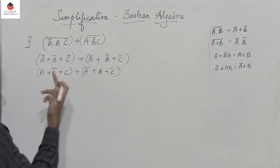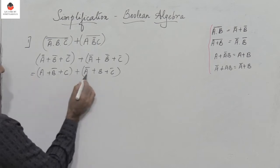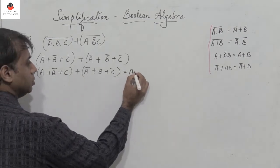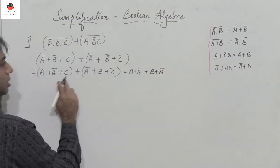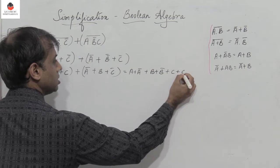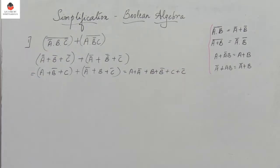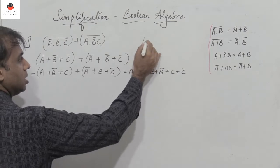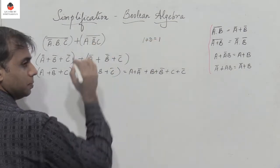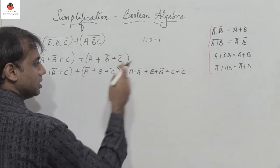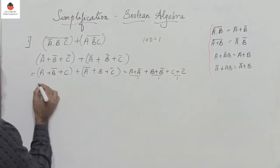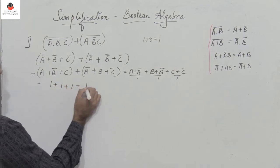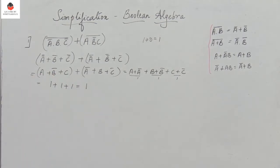Adding all of them together, we have a + ā + b + b̄ + c + c̄. Now, a + ā: if a is 1, ā is 0, so 1+0 = 1. The same applies for b + b̄ and c + c̄. So we get 1 + 1 + 1 = 1. A very simple problem.